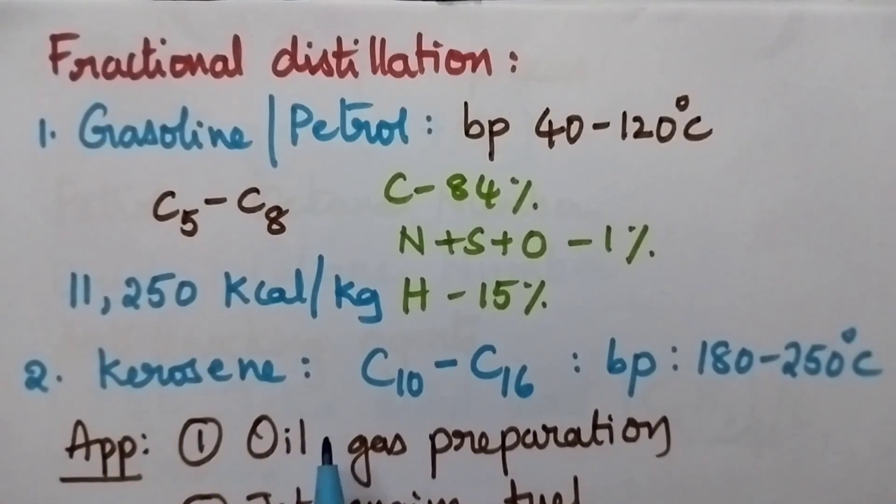Moving to the kerosene, the hydrocarbons ranging from C10 to C16 can be considered as kerosene. Hence its boiling point is 180 to 250 degree centigrade. The important applications of kerosene are: it is used for the preparation of oil gas and also it is used as jet engine fuel.